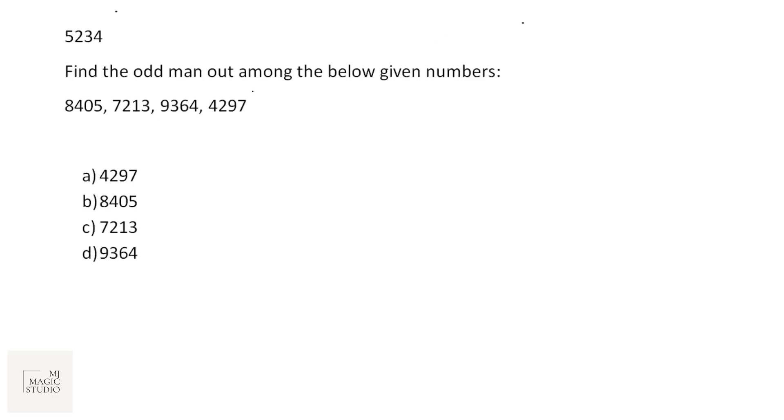Find the odd one out among the below given numbers: 8405, 7213, 9364, 4297. I'm just finding the digital sum. Breaking it into odd and even classification is very lame. Let's try to do something with the digit sum. 8 plus 4 plus 0 plus 5 is 17. 7 plus 2 plus 1 plus 3 is 13. 9 plus 3 plus 6 plus 4 is 22. And 4 plus 2 plus 9 plus 7 is 22.